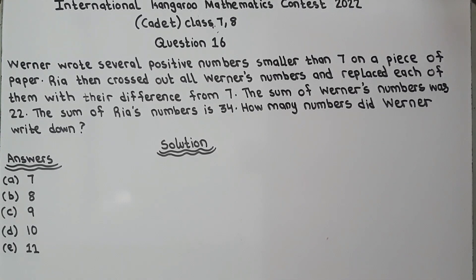Now they are saying that Werner wrote positive numbers smaller than 7 on a piece of paper and Ria crossed out all Werner's numbers and replaced each of them with their difference from 7.